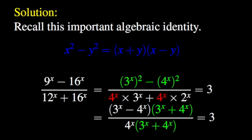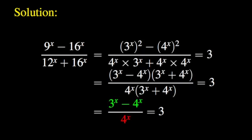It is clear that the common factor for both the numerator and the denominator is the quantity 3 to the power x plus 4 to the power x. We can therefore simplify our fraction by removing this common factor from both numerator and denominator. Our simplified fraction now has numerator 3 to the power x minus 4 to the power x, and denominator 4 to the power x.